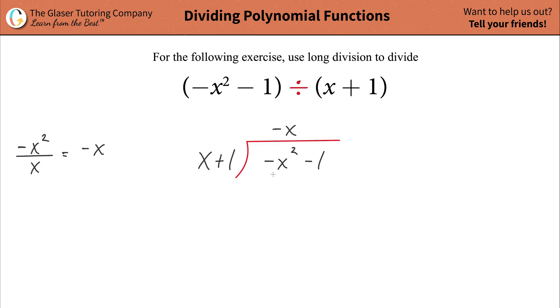Now plug in a subtraction symbol there and parentheses. Then you're going to take this term here and distribute it to each term in your divisor. Now first do the outer. So negative x times x is going to be negative x squared.